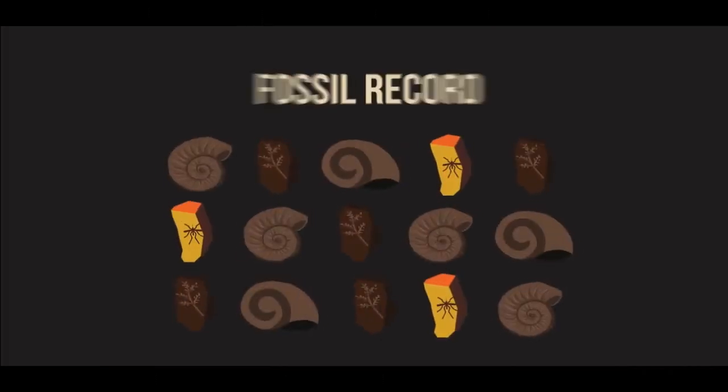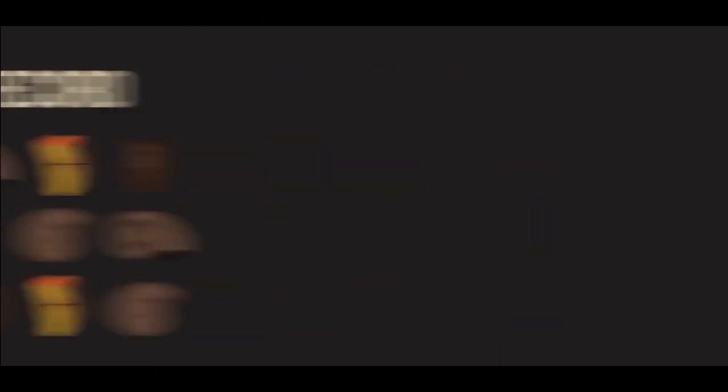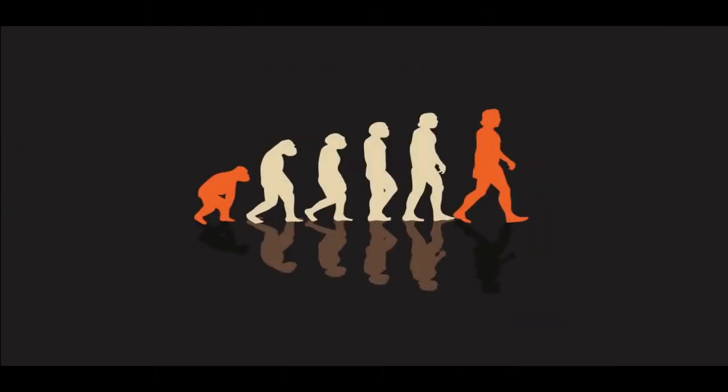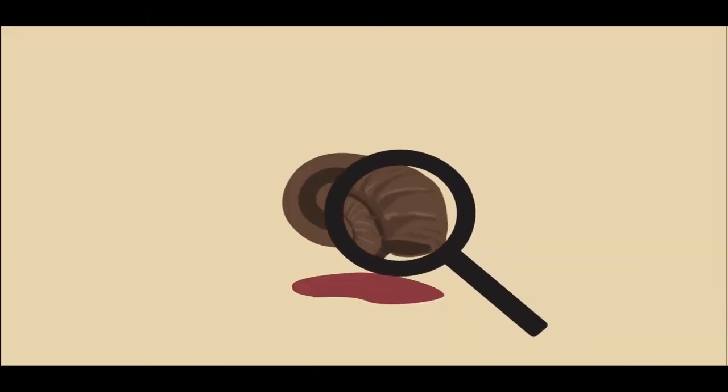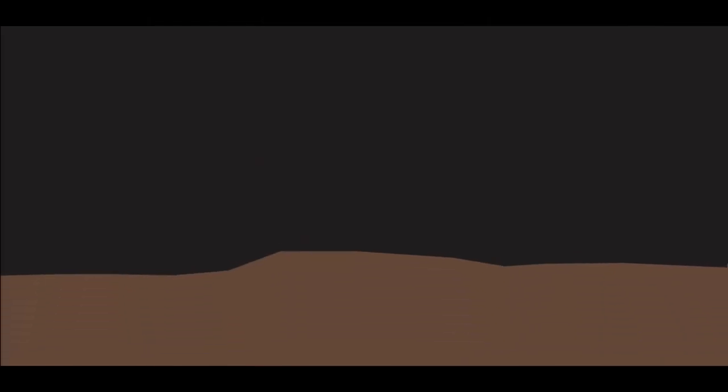The total number of fossils and their placement within rocks is known as the fossil record. Much of what we understand about evolution comes from studying fossils, so they are really important. But how do they form?